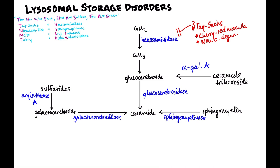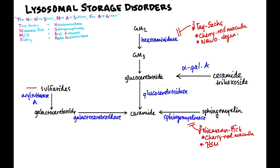The next disease is associated with arylsulfatase A and is called metachromatic leukodystrophy. What to remember here: MS symptoms in a child. All of these diseases affect children.